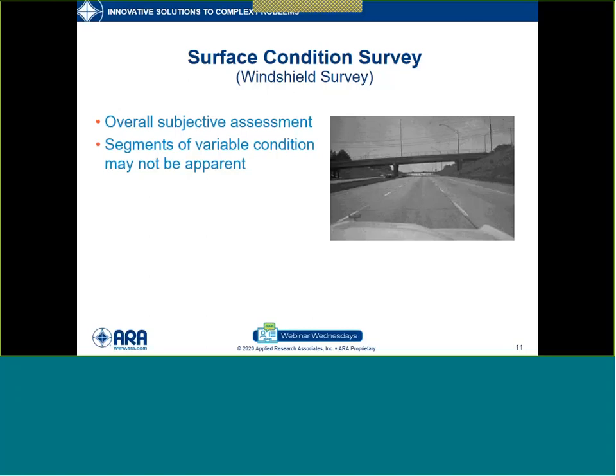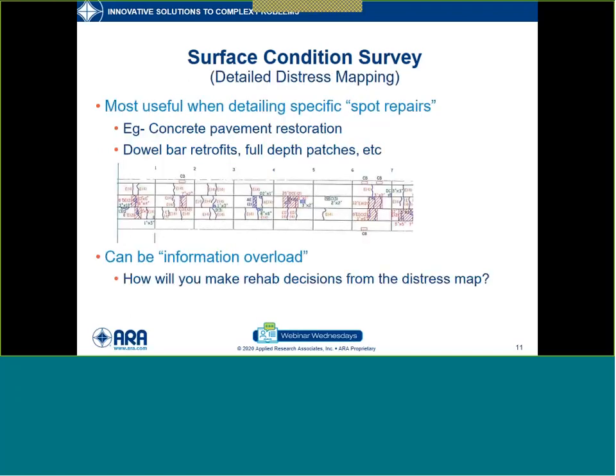How would you do a surface condition survey? Starting out with a good old-fashioned windshield survey — I still do these sometimes today myself. They provide an overall subjective assessment of the pavement, but if you imagine driving along a modest two-mile project, the human brain can only catalog and comprehend so much. It'd be difficult to distinguish whether the middle third had different conditions than the other sections. So good for an overview, but not always enough detail to distinguish variability. The other extreme would be to literally map all of the distress on some kind of a drawing.